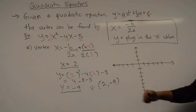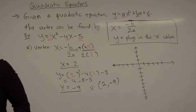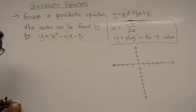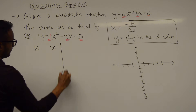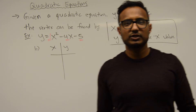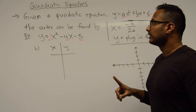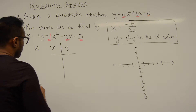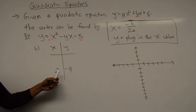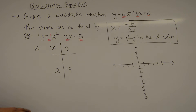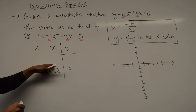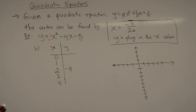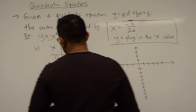Part b says complete the following table. To graph a quadratic equation you need five points. The vertex from part a was (2, -9), and it goes in the center of your table — x-value 2, y-value -9. Then you pick two points to the left of 2, which are 1 and 0, and two points to the right of 2, which are 3 and 4.